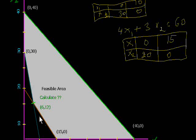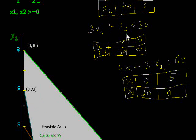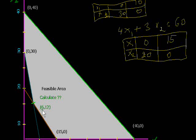For the third constraint: when X1 is 15, X2 is 0. When X1 is 0, X2 is 20. The intersection point is at X1 = 6 and X2 = 12.